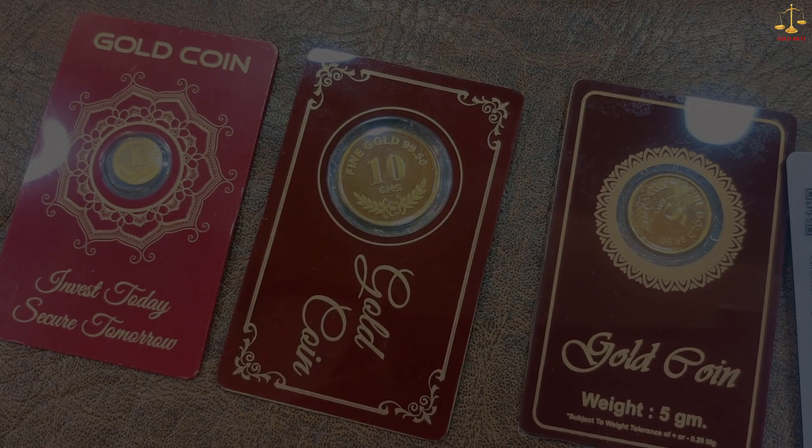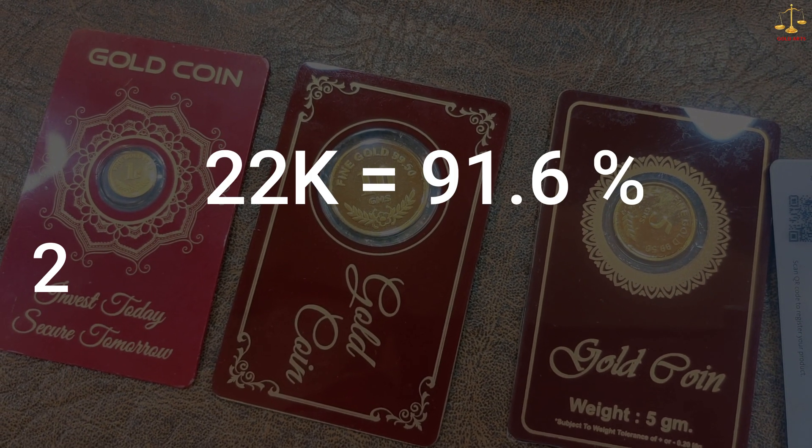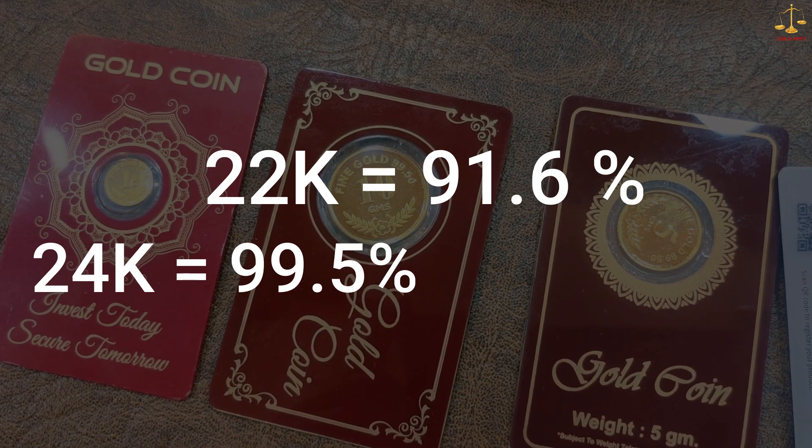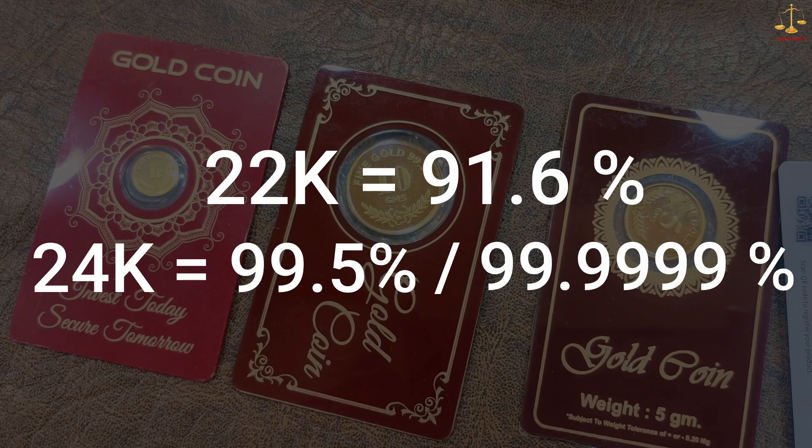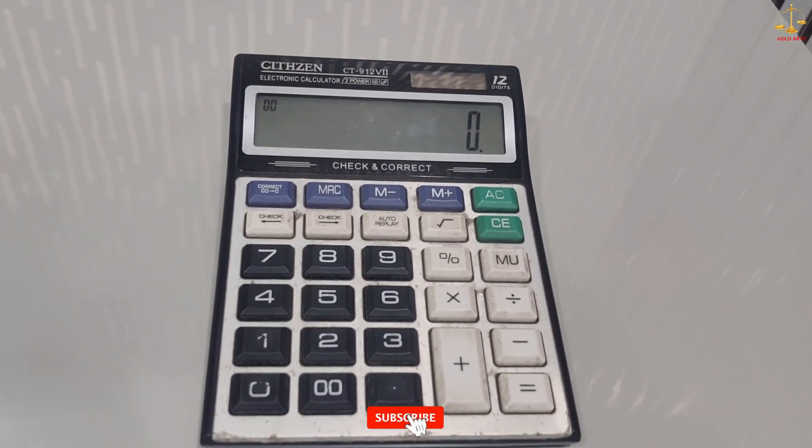Let's start the video. 22 karat is 91.6% pure gold, and 24 karat gold coin could mean it's either 99.5% or 99.9999% purity of gold. The calculation is very simple. Assuming you are buying 12 grams of 22 karat jewelry: